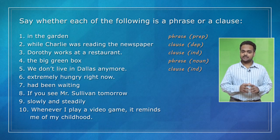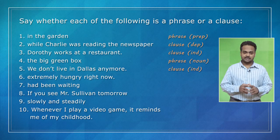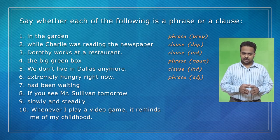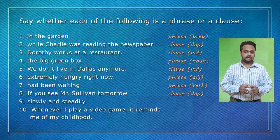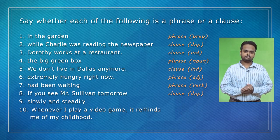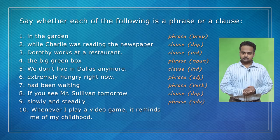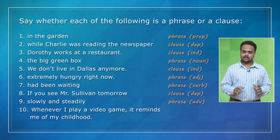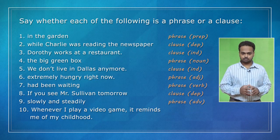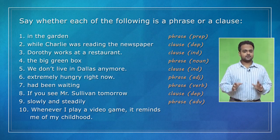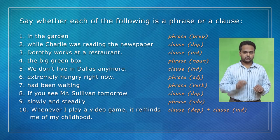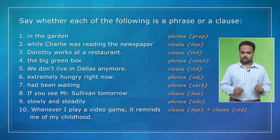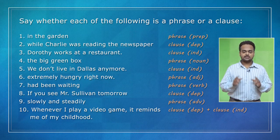Number five is a clause and it's an independent clause. Number six is a phrase and it's an adjective phrase because the focus is on 'hungry.' Number seven is a phrase and it's a verb phrase. Number eight is a clause and it's a dependent clause because it's not a full sentence. Number nine is a phrase and it's an adverb phrase because the focus is the adverbs 'slowly' and 'steadily.' And finally, number ten is a little tricky — this is actually not one phrase or clause, it's a sentence with two clauses. The first clause, 'whenever I play a video game,' is dependent, and the second clause, 'it reminds me of my childhood,' is independent.